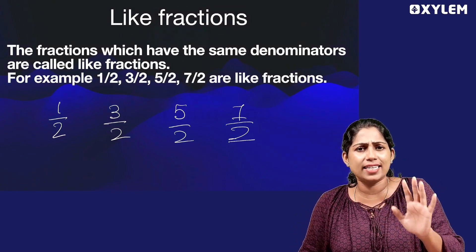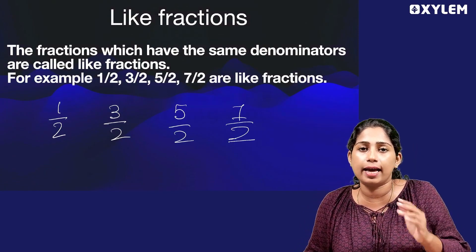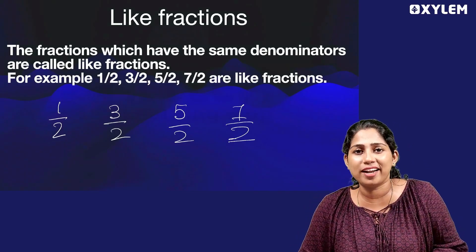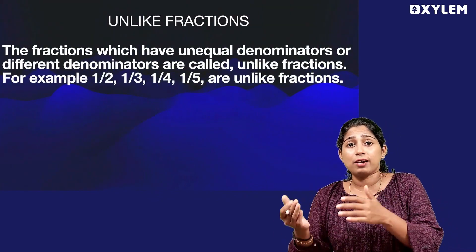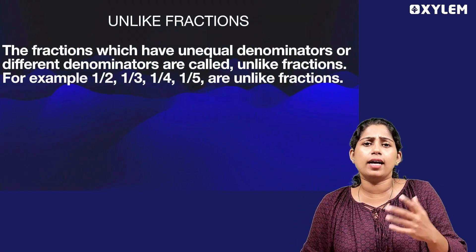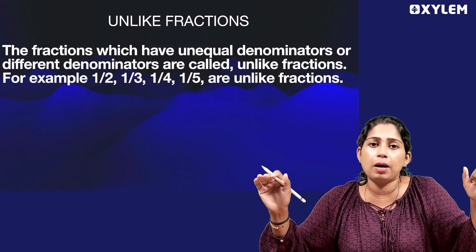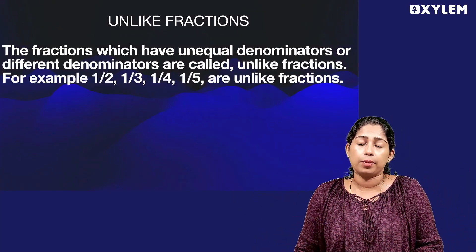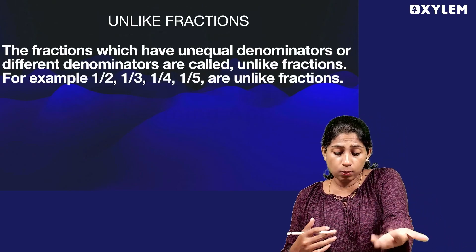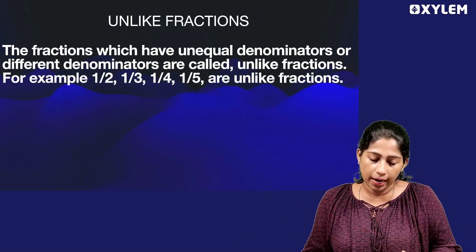Okay, so we have an easy concept of like fractions. Like fractions have the same denominator. Unlike fractions, on the other hand, have unequal or different denominators — we call them unlike fractions.